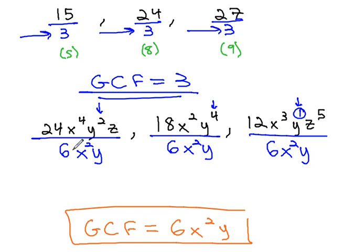As a check to make sure that's right, we can divide each of these. 24 by 6 to get 4. X to the fourth over x squared is x squared. Y squared over y is y. And we have z. No fractions.